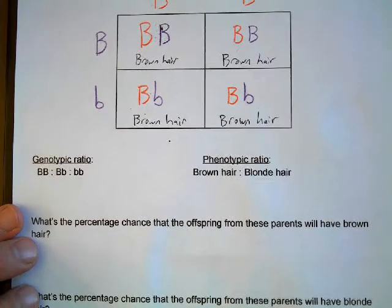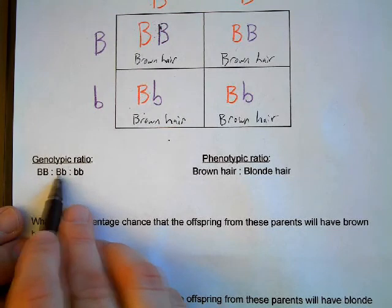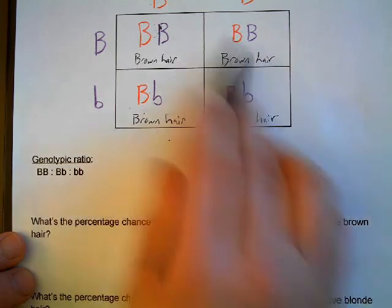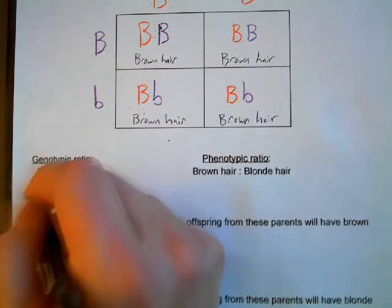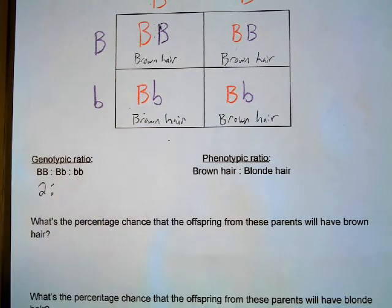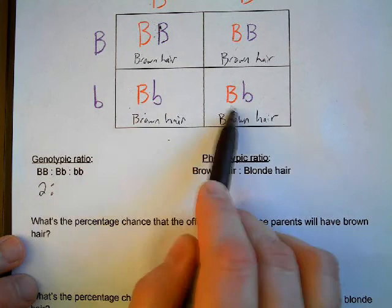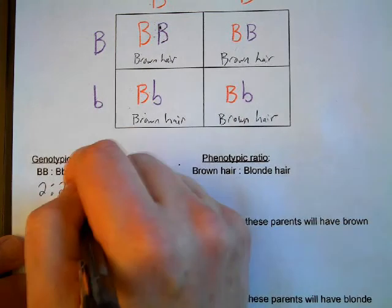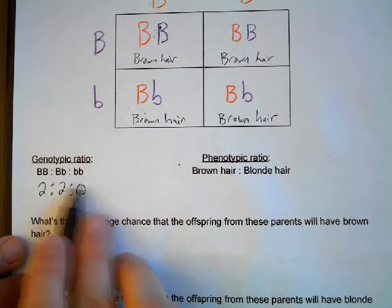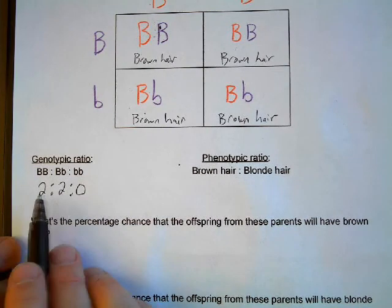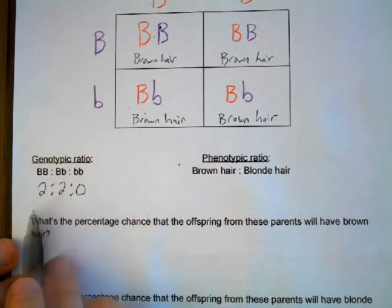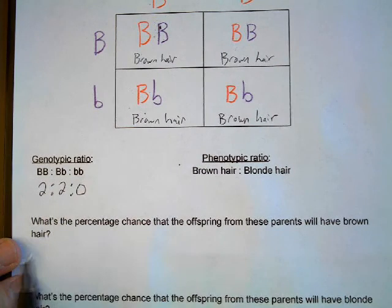All four offspring would have brown hair. Now I can fill out my genotypic and phenotypic ratios based on the Punnett square. The genotypic ratio is homozygous dominant to heterozygous to homozygous recessive. How many of the four would be capital B capital B? Two of them. How many would be heterozygous capital B lowercase b? Two. And how many would be lowercase b lowercase b (homozygous recessive)? None — zero. In my class, I want you to write a zero here, so the genotypic ratio is two to two to zero.